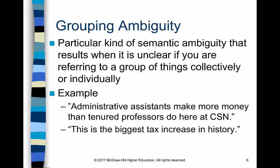Grouping ambiguity is a particular kind of semantic ambiguity that occurs when the words you're using make it unclear whether you're referring to individuals or to groups. For example: 'Administrative assistants make more money than tenured professors do here at CSN.' This seems false on first reading — tenured professors generally make more individually. But are they talking about individuals or the group as a whole? If you grouped all AAs together, would their combined salary exceed the combined salary of all tenured professors? You can see how confusing it is without knowing which is meant.